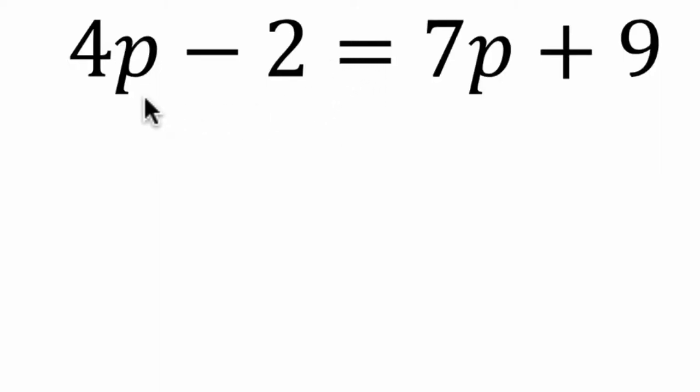Okay, so in this equation we have this variable p on the left, 4p, and this term 7p on the right.